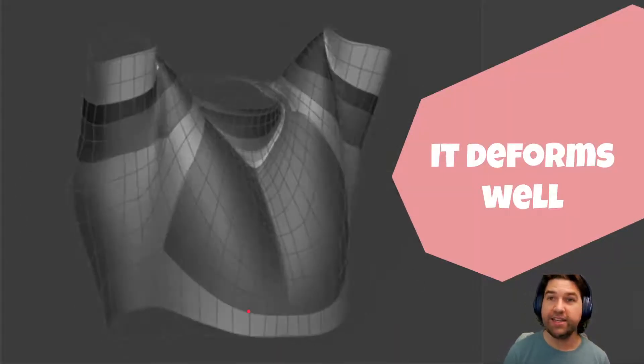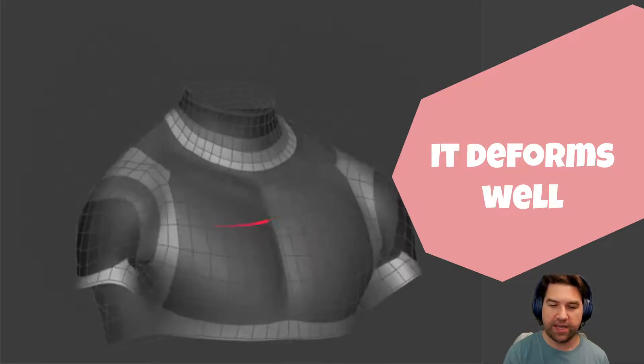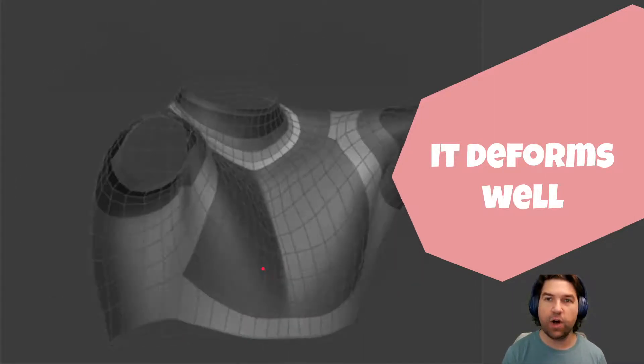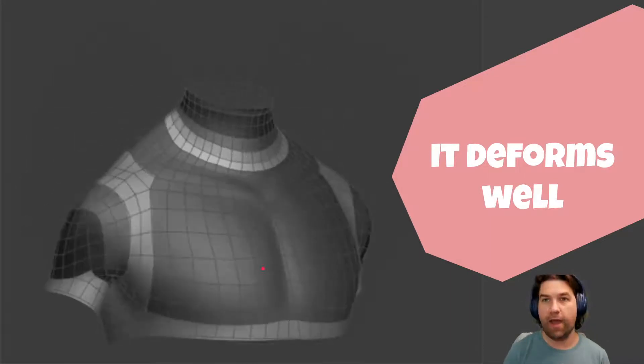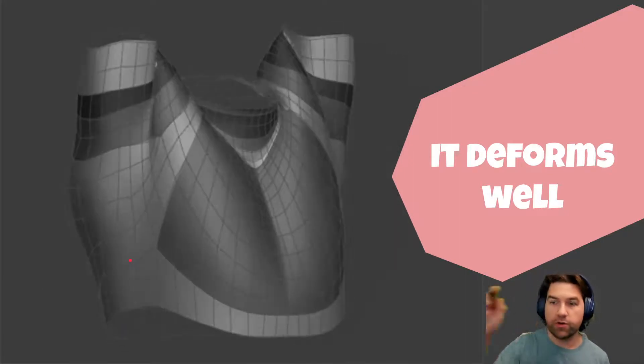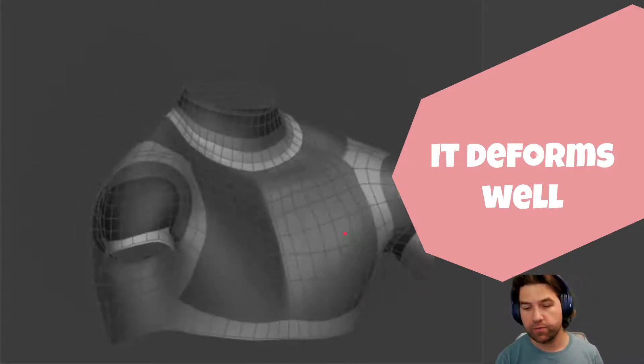Another reason we like quads is they deform really well. This is another Hippydrome example. Because these are evenly distributed quads, we can bend them and deform them. In fact, anywhere you want something to deform, you almost always want a loop around. And we're going to talk about exactly what a loop means.